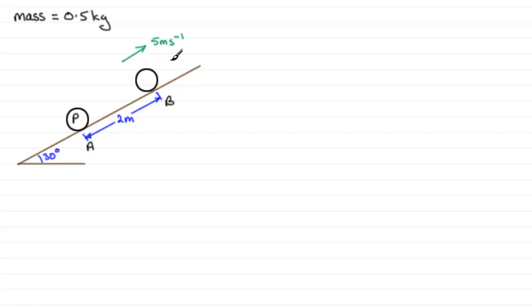The plane is smooth from A to B and what we've got to do is find the speed of projection at A. I'm going to mark that on. Let's call it u, so I have that as u meters per second up the plane.